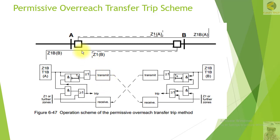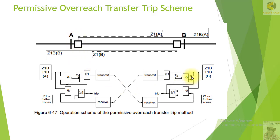Here you can see station A and station B. This is zone 1 for station A, and this is zone 1B for station A, which is the zone 1 extension, called Z1B. If the relay picks up in Z1B, it will immediately send the transfer signal. When Z1B picks up, it gives a permissive signal to station A, and it also comes into AND operation.